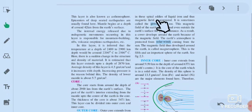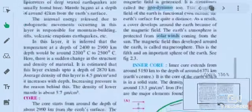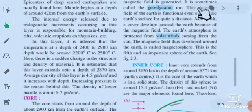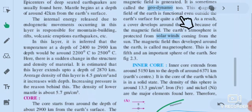In the area there are spiral eddies of liquid iron and this magnetic field is generated. It is sometimes called the geodynamo. To this, magnetic field of the earth is functional even outside the earth's surface for quite a distance. As a result, a cover develops around the earth. Because of the magnetic field, the earth's atmosphere is protected from solar winds coming from the sun. The magnetic field does develop around the earth is called the magnetosphere.